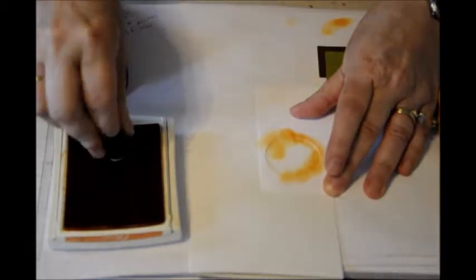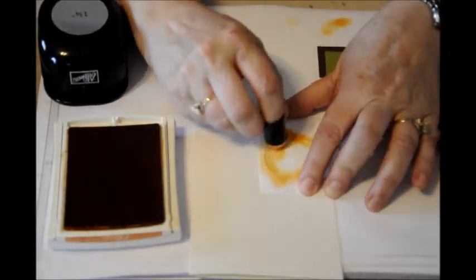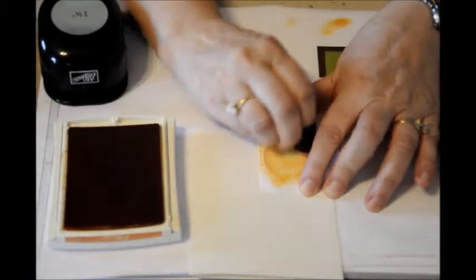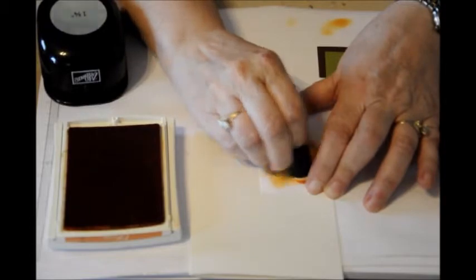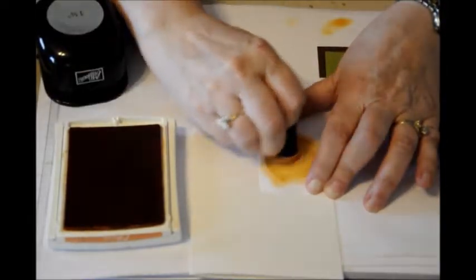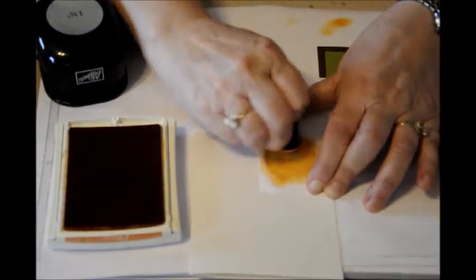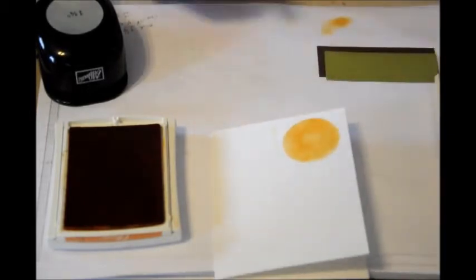That helps get nice coverage without the circles you sometimes get from using a sponge. You can see I'm just holding it, and you decide how dark you want it. Now you can take that off and you have your sun.